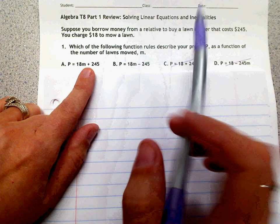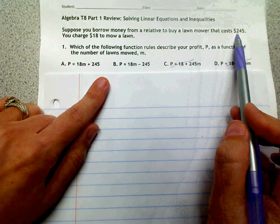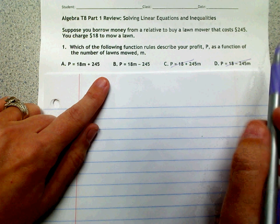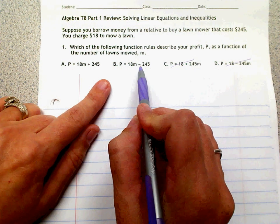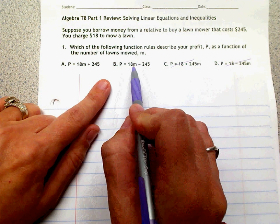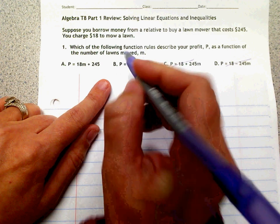But it's not. If we read our scenario, he had to pay $245. So that has to come out of his profit total, so it has to be subtracted from how many lawns that he's mowed. So our answer here is B.